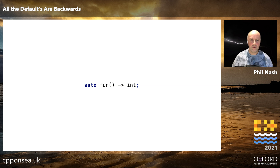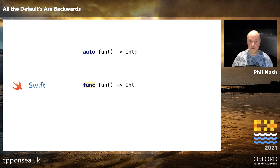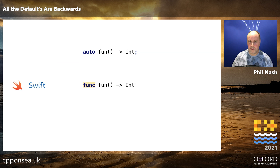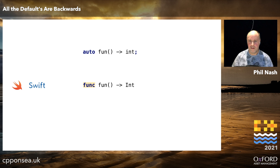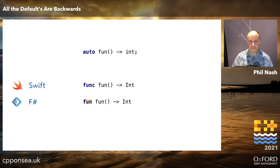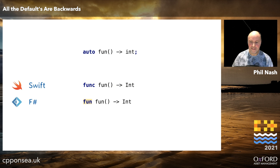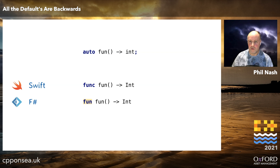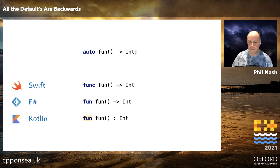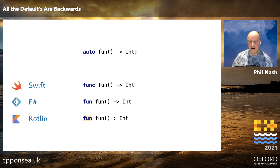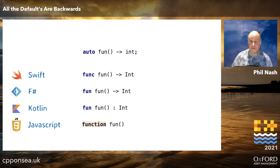Let's look at other languages again, starting once more with Swift — it has that 'func' keyword instead of 'auto' but otherwise looks very similar. F# is similar again but with one character less — definitely a fun language to work with. Same with Kotlin — very similar, just with a colon instead of the arrow. JavaScript is a bit more verbose; you have to spell out 'function', though there is a shortcut for that of course.